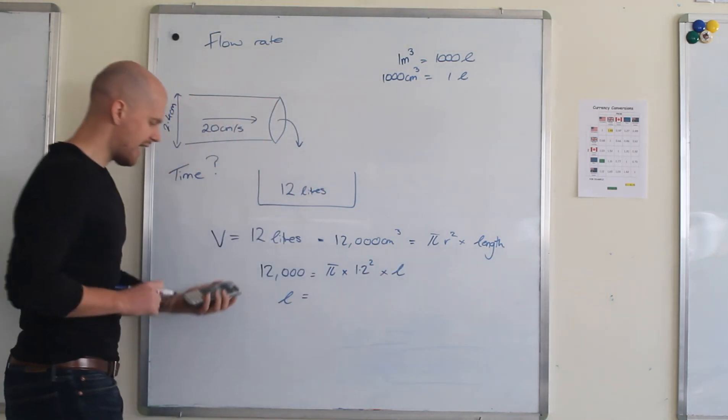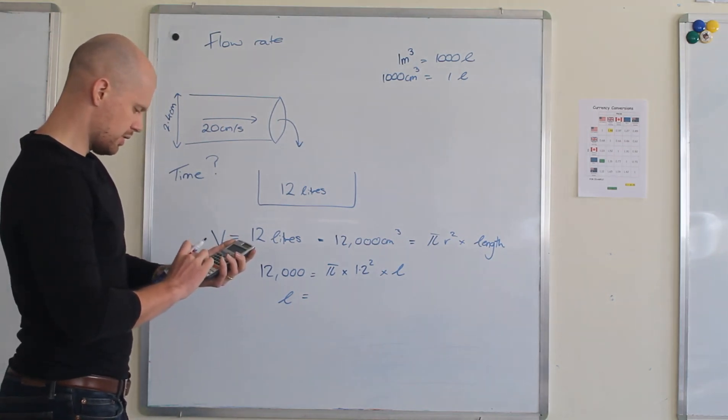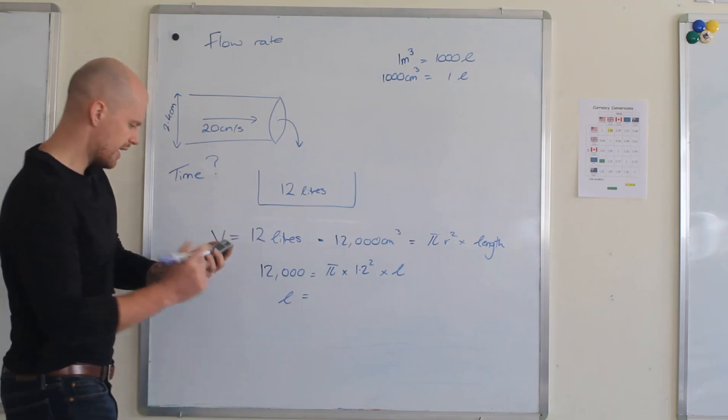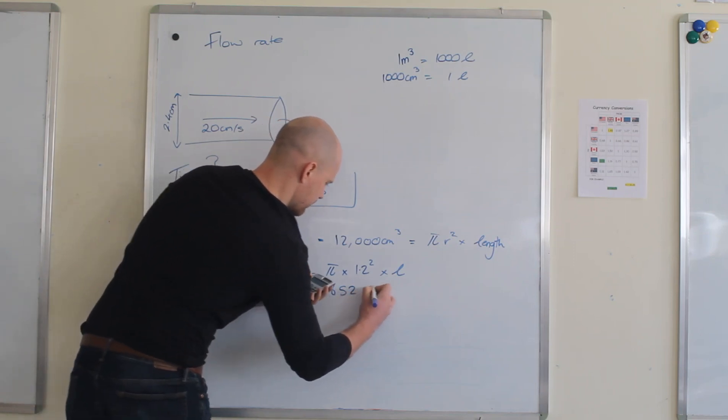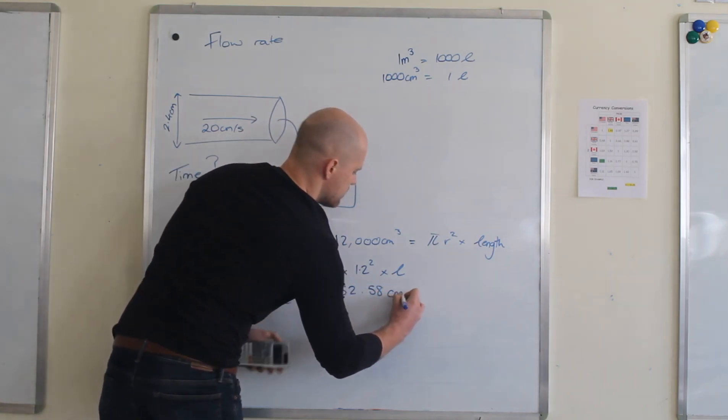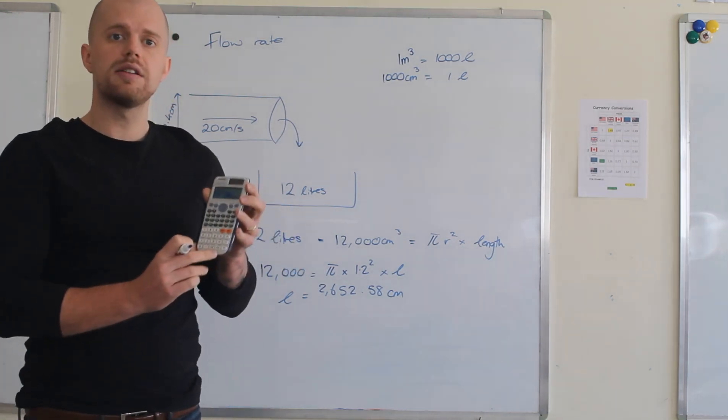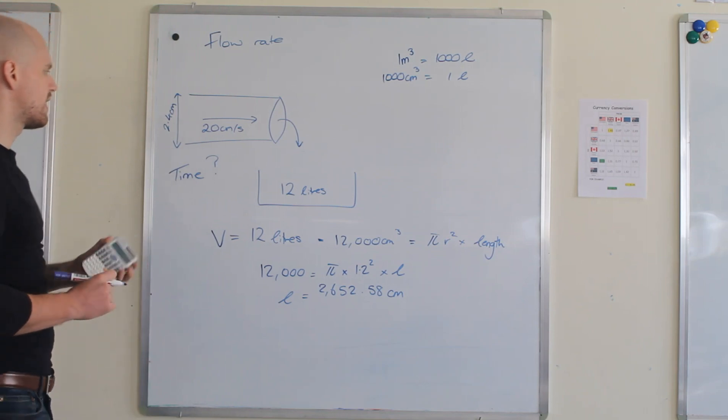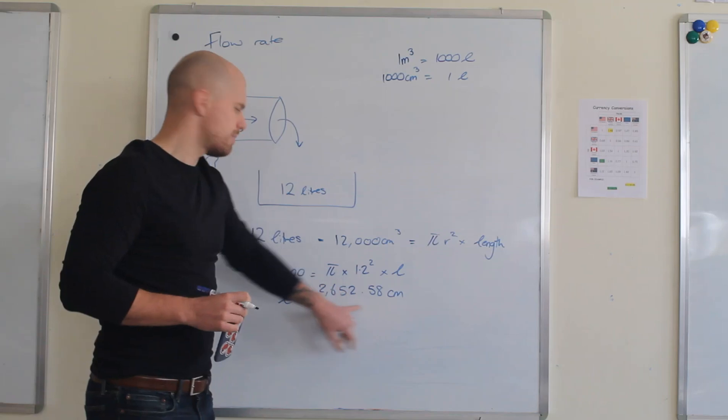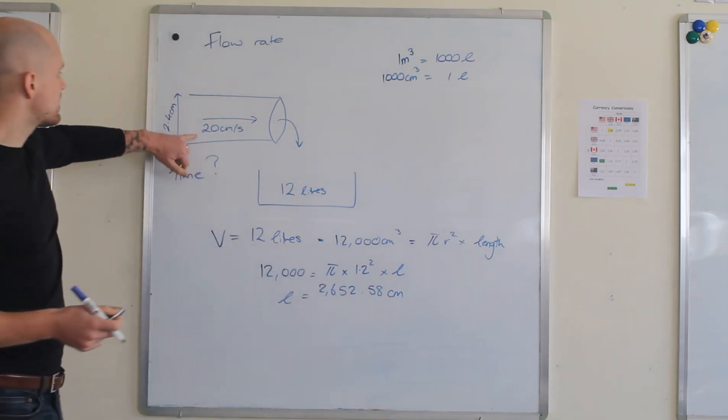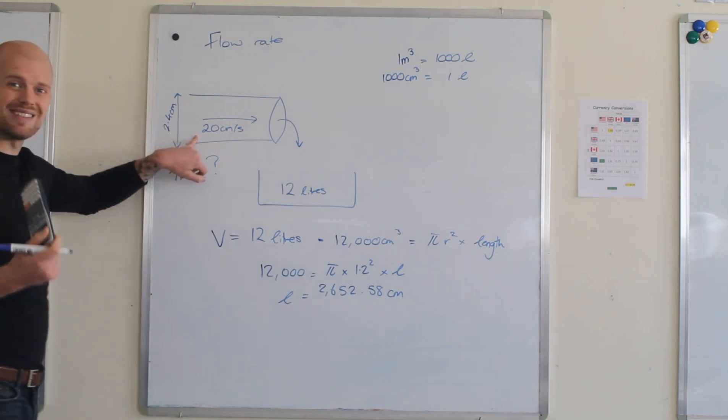Which means that L, when I put it in my calculator, I do 12,000 divided by pi times 1.2 squared. So I get 2652.58 centimeters. Now, it does carry on, so be careful, make sure you're using the answer button on the calculator for the next bit. Now, I'm given that this is centimeters, that's my length, and I'm given the speed. Speed is distance over time, so time is distance over speed.